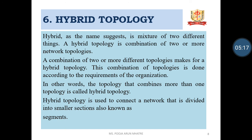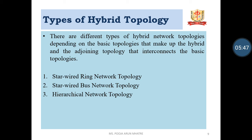In other words, the topology that combines more than one topology is called hybrid topology. Hybrid topology is used to connect a network that is divided into segments, and it is used for a particular application which depends on the requirements of that application. Types of Hybrid Topology: There are different types of hybrid network topologies depending on the basic topologies that make up the hybrid and the adjoining topology that interconnects the basic topologies. The first one is Star Wired Ring Network Topology, the second is Star Wired Bus Network Topology, and the third is Hierarchical Network Topology.